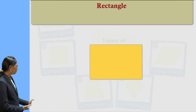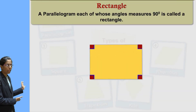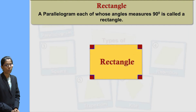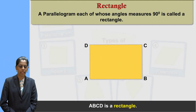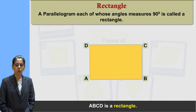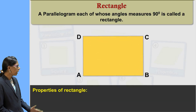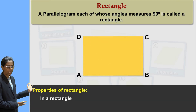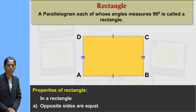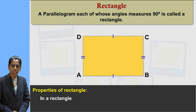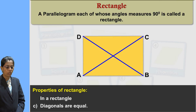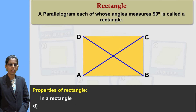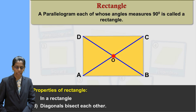Let us see the second type: rectangle. This is rectangle ABCD. A parallelogram each of whose angles measures 90 degrees is called a rectangle. In this figure, ABCD is a rectangle. The properties of a rectangle are: opposite sides are equal, each angle measures 90 degrees, and diagonals are equal.